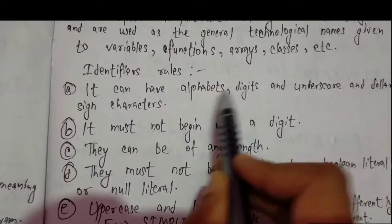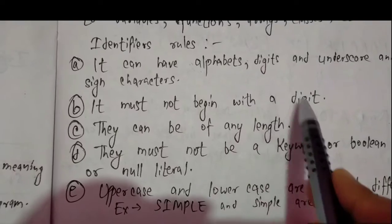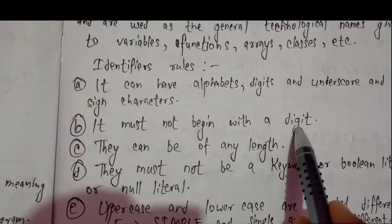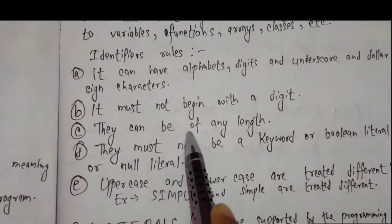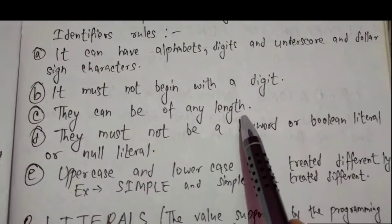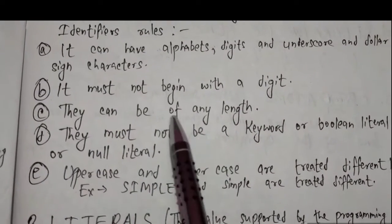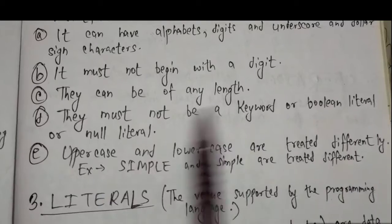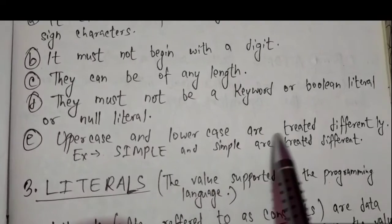The name of the class in Java should not start with a digit, or a variable's name should not start with a digit. It can be of any length. The length of the variable's name is not fixed, or a class name. It must not be a keyword, or boolean literal, or a null literal.